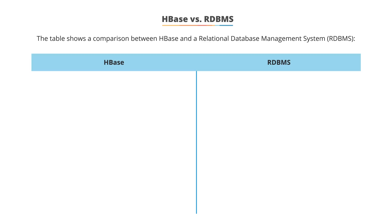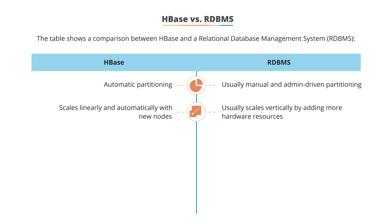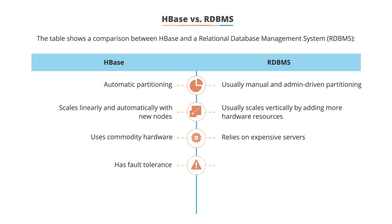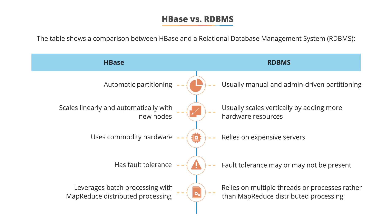HBase versus RDBMS. HBase provides advantages in comparison to the relational database management system. HBase allows automatic partitioning as compared to manually partitioned RDBMSs. HBase can scale linearly and automatically with new nodes, whereas RDBMS primarily scales vertically by adding more hardware resources. As part of the Hadoop ecosystem, HBase uses commodity hardware, while RDBMS relies on expensive servers. HBase has mechanisms for fault tolerance that RDBMS may or may not have. HBase leverages batch processing with MapReduce distributed processing, whereas RDBMS relies on multiple threads or processes.